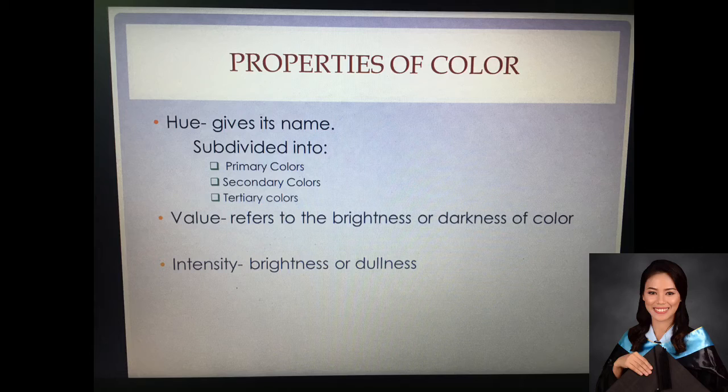Tertiary colors are six in total. These colors are achieved when primary and secondary colors are mixed. For example, if you mix yellow and green, you have yellow-green. If you mix red and orange, you create red-orange. The same applies for blue-violet. That's tertiary colors.